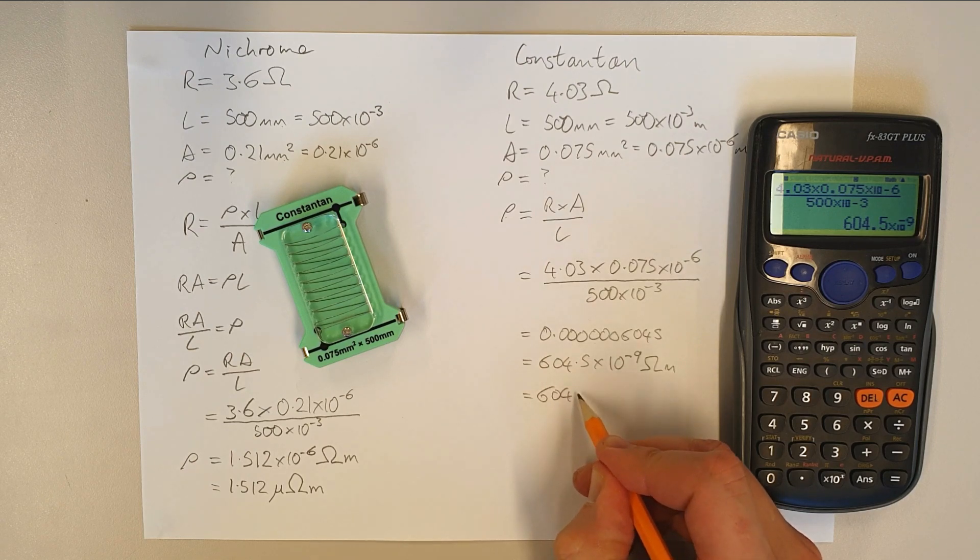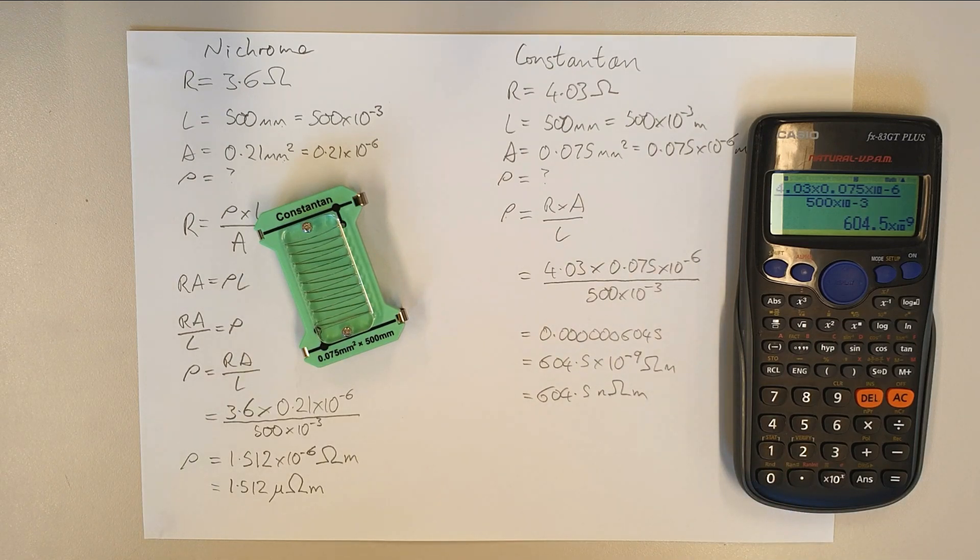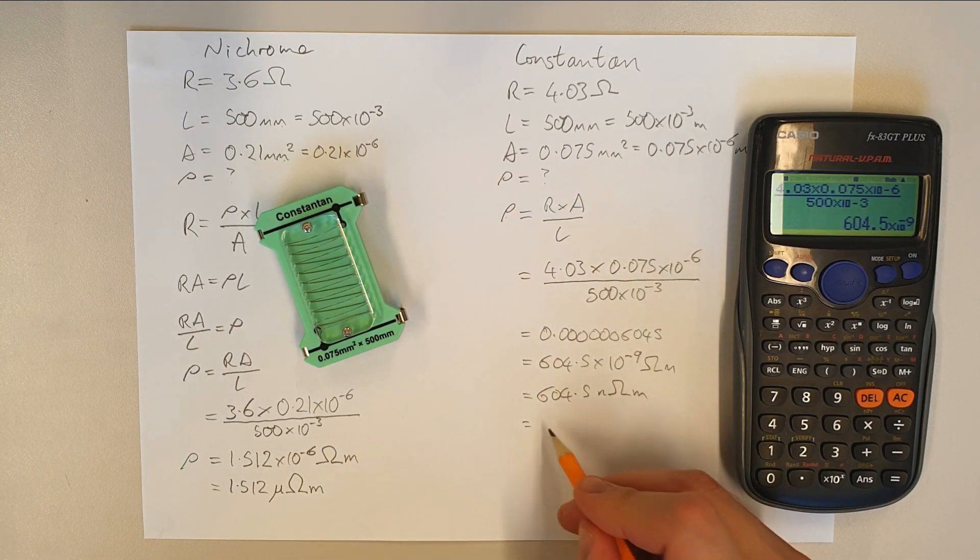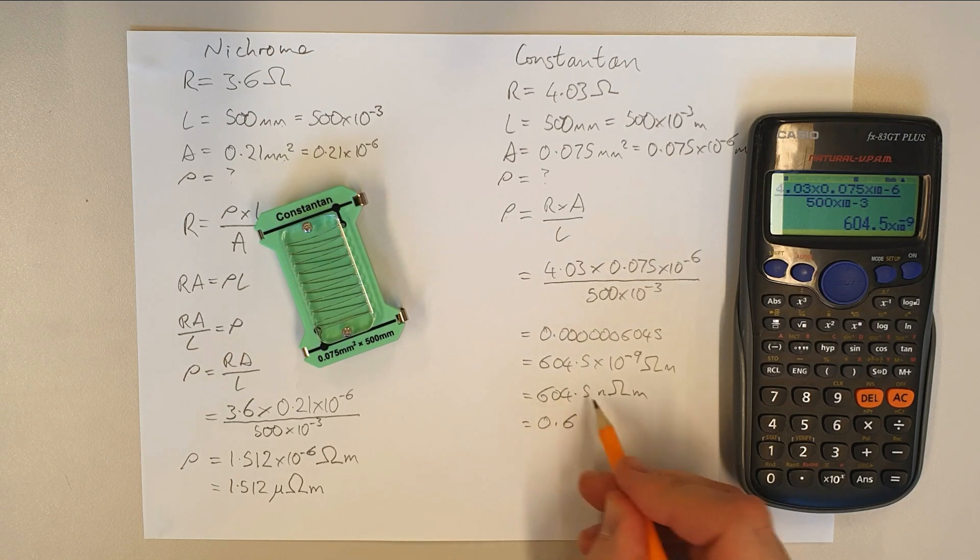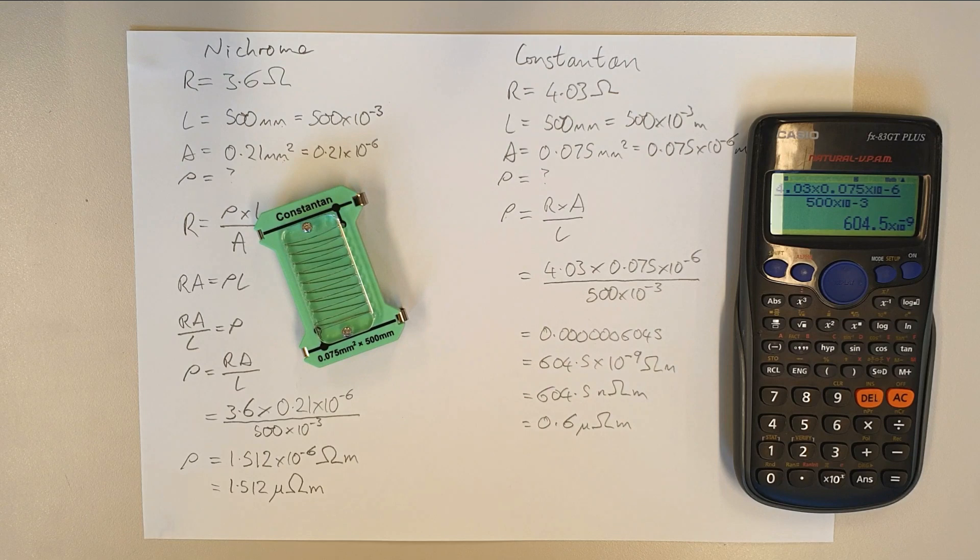We could write 604.5 nanohm meters. So that's what we could go for there if we wanted to. But I think most textbooks, when it's trying to compare it to other values, would probably put it as 0.6 micro ohm meters. So it'd move the decimal point over there and change the nano to a micro. So you can see there that we've got a resistivity now of 0.6 micro ohm meters.